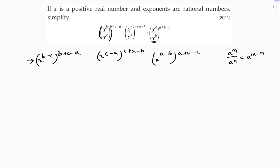Now I will use the law of exponents: a power m, whole power n, is a power mn. So I will multiply b minus c and b plus c minus a.